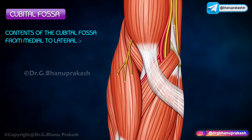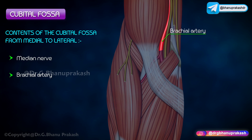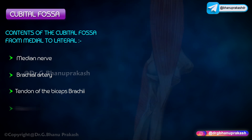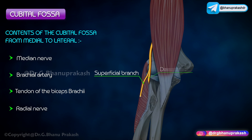Contents of the cubital fossa from medial to lateral: the median nerve, which leaves the fossa by passing between the two heads of the pronator teres; the brachial artery, which normally bifurcates into the radial and ulnar arteries near the apex; the tendon of the biceps brachii, which passes backwards and is attached to the radial tuberosity; and the radial nerve, which lies between the brachialis and brachioradialis, where it divides into a superficial and deep branch.